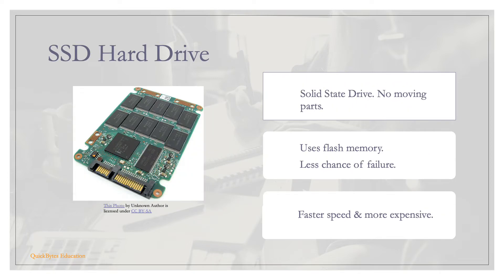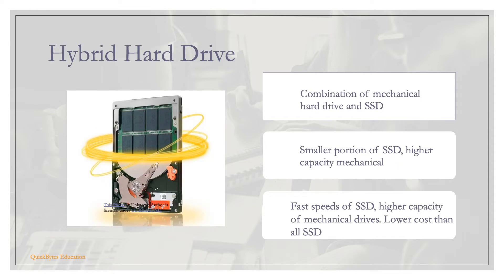SSDs, or solid state drives, have no moving parts and use flash memory chips. They have less chance of failure, offer faster speeds, and are relatively more expensive than magnetic hard drives. Hybrid drives combine a mechanical drive and a small SSD portion, giving you the fast speeds of SSDs and the large capacity of mechanical drives, typically at a lower cost than a full SSD of the same capacity.